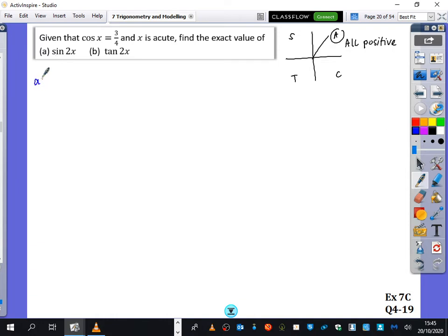So let's start off by thinking about a, which is sine 2x. We know that that is 2 sine x cos x. We already know what cos x is, but I want to find out what sine x is. And that's the same as what we've done earlier on.